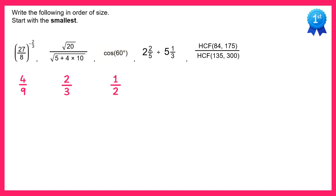Next we'll have a look at the mixed numbers. We'll first convert them to improper fractions: 2 times 5 is 10, add 2 is 12, so the first one is 12 over 5. And we'll divide this by 5 times 3 plus 1, so that's 16 over 3.